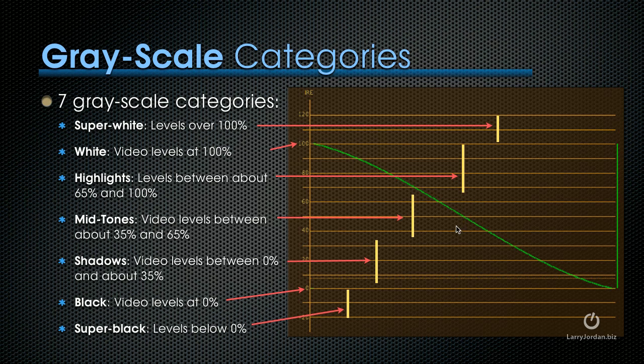The middle third, called mids or mid-tones or mid-grays, are video levels between about 35 and 65%. And the bottom third, called shadows, are video levels between 0 and 35%. Shadows provide vibrancy and richness. Mid-tones provide time of day and emotion, and highlights provide energy or excitement.